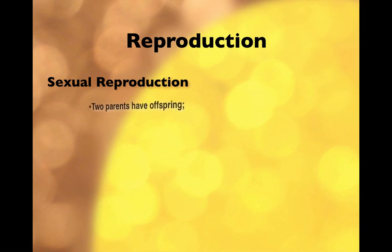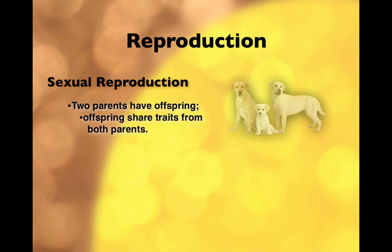There are a couple types of reproduction. The first is sexual reproduction. In sexual reproduction, two parents produce an offspring, and the offspring shares traits from both parents because the genes give the offspring those traits. That's something we'll deal with in the next few presentations.